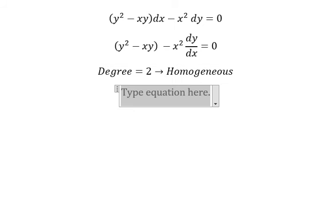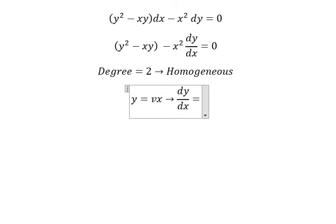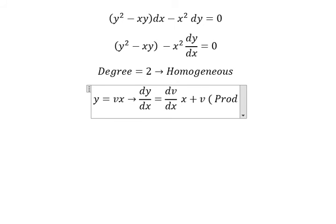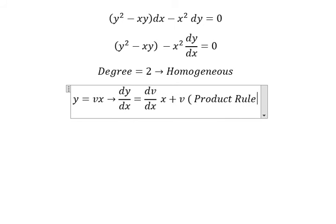So I will put y equals vx. If I do the first derivative for both sides, you got dy/dx. First derivative of v, you got dv/dx multiplied by x. First derivative of x, you got number one. So we have v. This is the product rule of the derivative.